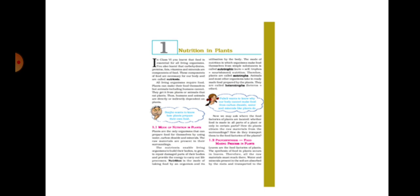Heterotrophs means they depend on others for their food. Autotrophs means they make their own food. Plants prepare their own food by using raw materials. We get nutrition from the food we eat. Therefore, there are two modes of nutrition: autotrophic and heterotrophic nutrition.